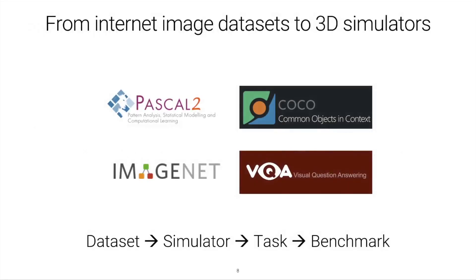This simulation capability can allow us to mirror the successes of internet image datasets on internet tasks — datasets such as ImageNet, Pascal VOC, MS-COCO, and VQA — to leverage datasets of environments, simulate within those environments, set up tasks for embodied AI agents, and then have a consistent measure of research progress, which is really a key requirement for enabling much of the success that we have seen in recent years in computer vision.